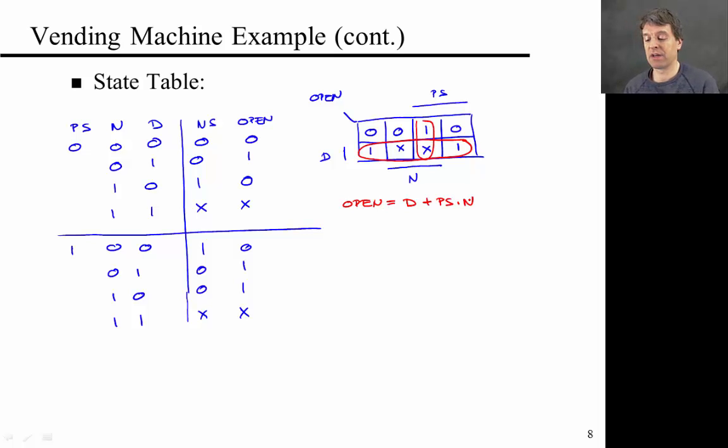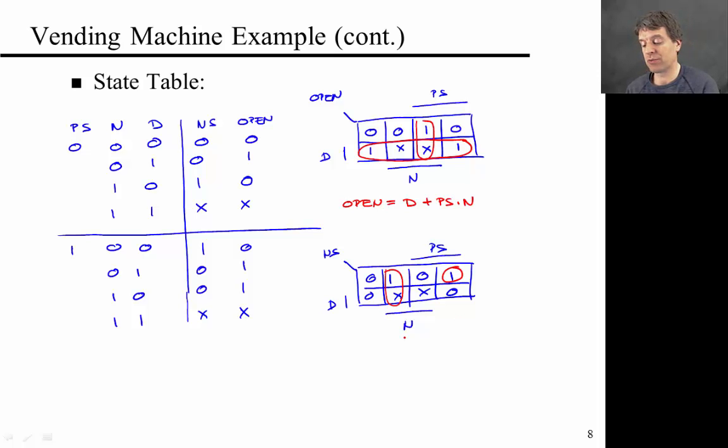You can do the same thing for next state. So again, draw the K-map, next state, nickel, present state, and dime. Copying over the values from the state table gives you zero, zero, one, x, zero, x, one, zero. So here, there's only, again, there's two circles. There's no way in which I can expand this circle that's required to cover this one here. So I'm just going to go with that. And then from there, I can derive that the next state has to be nickel and not present state, or present state and not dime and not nickel.